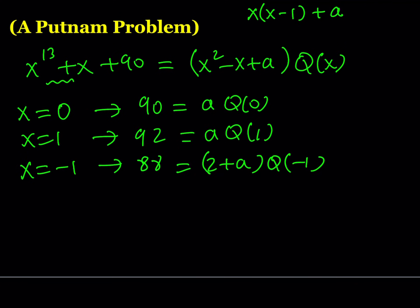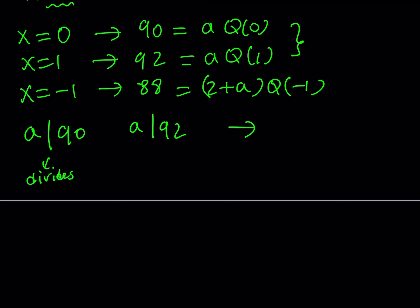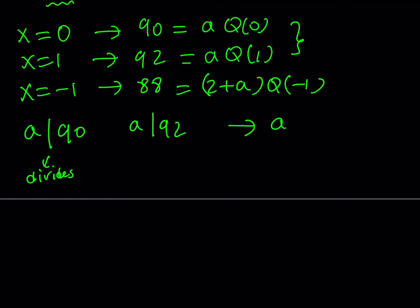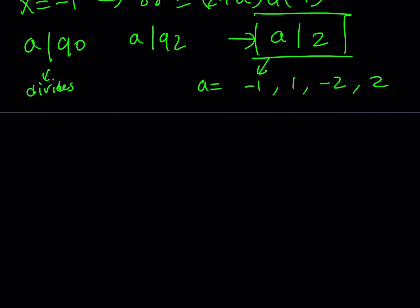So we now have 3 equations and we're going to use some divisibility criteria. The first two equations tell us that a divides 90 and a divides 92. If a divides both of these numbers it also divides their difference, which is 2. So we now know that a divides 2, which is very important because from here we only get 4 options: a can be negative 1, 1, negative 2, or positive 2. Those are the candidates for a and we're going to test each one.